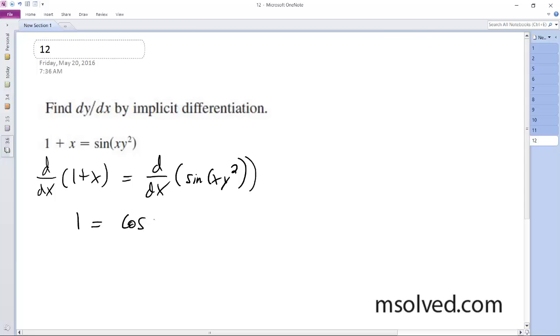So cosine of x, y squared, and then derivative on the inside is going to be times